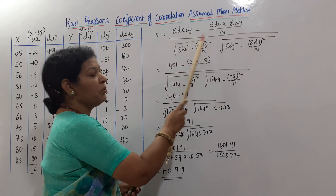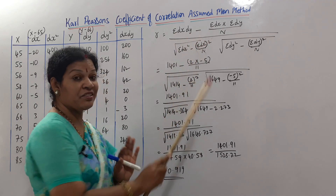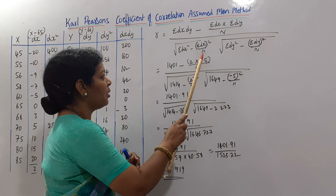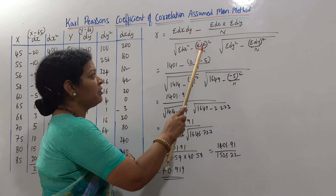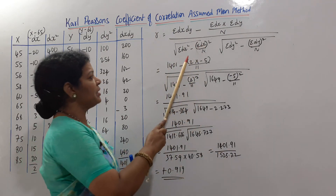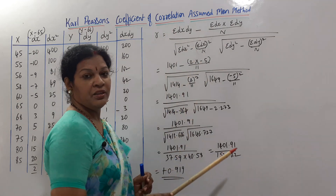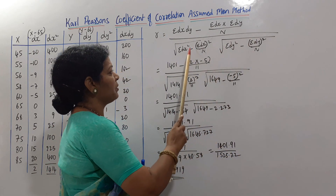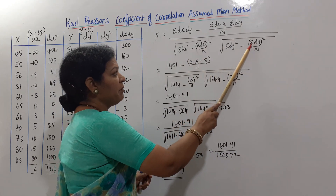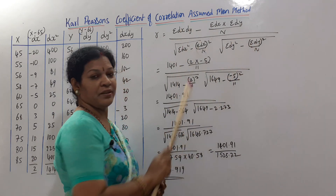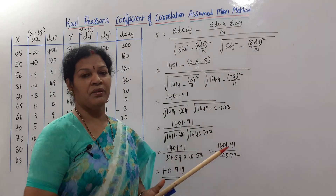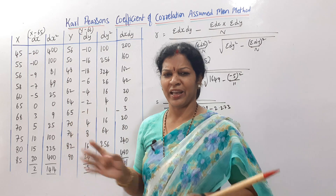The denominator continues: multiplied by the square root of sigma(dy²) minus sigma(dy) whole squared by n. Note that n is outside the whole square. The dy part of the formula follows the same fashion as the dx part. Remember this formula carefully.